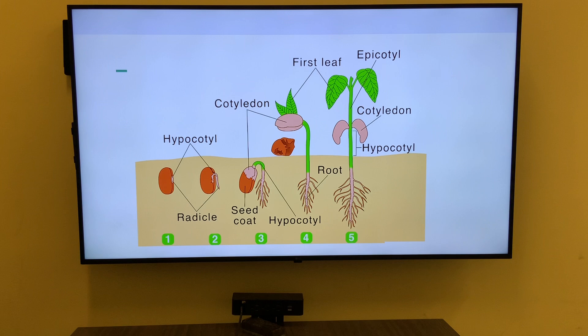As the radicle continues to grow, the shoot also emerges from the seed. The shoot consists of the stem and the first leaves of the seedling. The stem grows upwards towards the light, while the leaves begin to photosynthesize and produce energy for the growing plant. As the seedling continues to grow, it develops true leaves, which are the first leaves that resemble the adult leaves of the plant.